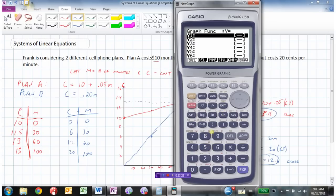So we'll graph in y1, 10 plus 0.05x. Notice the calculator always does y and x. It doesn't know about C and M. But that's okay. 0.2 times x.